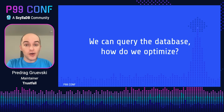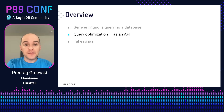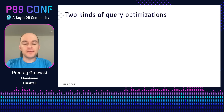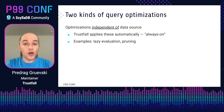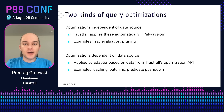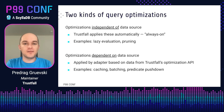Okay, we can query the database. How do we optimize? Let's take a look at how TrustFall's optimizations API allows us to do optimizations like predicate pushdown. We can split query optimizations into two categories. The first is optimizations that are independent of the data source — things like lazy evaluation. We don't have to worry about these too much, because TrustFall applies them automatically; they're always on. The second kind is optimizations that are more situational — dependent on the underlying data source. They're things like caching, batching, and predicate pushdown. And they have to be implemented by the adapter based on information provided by TrustFall's optimization API.